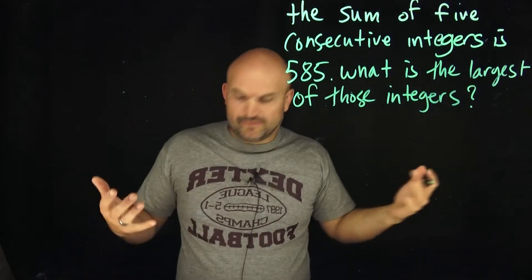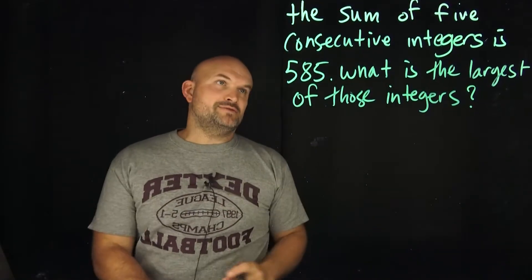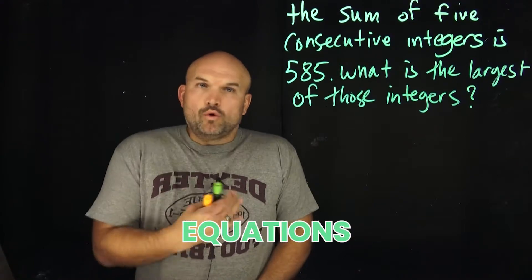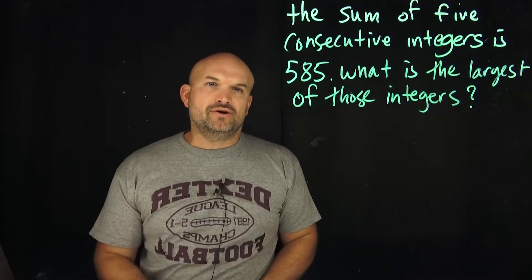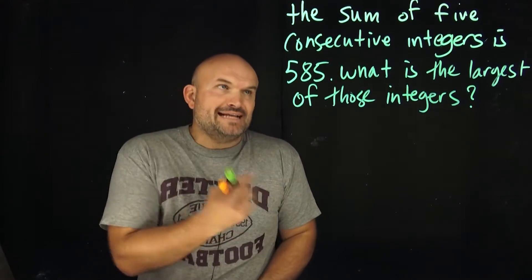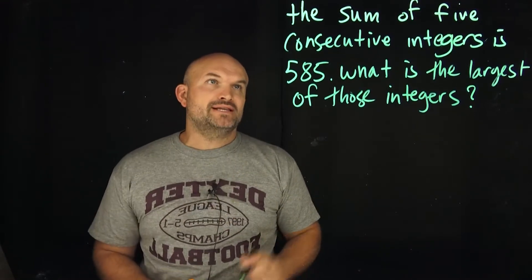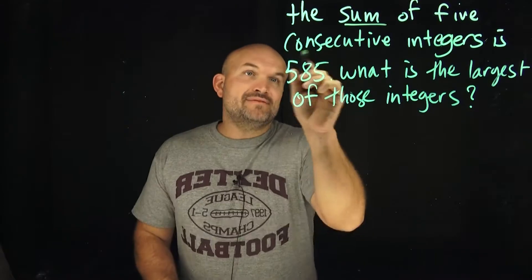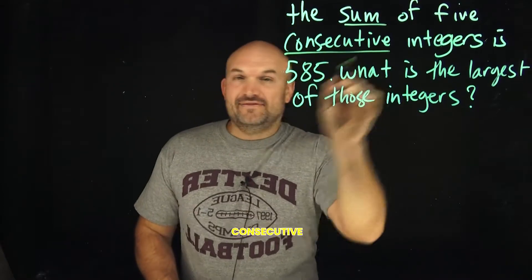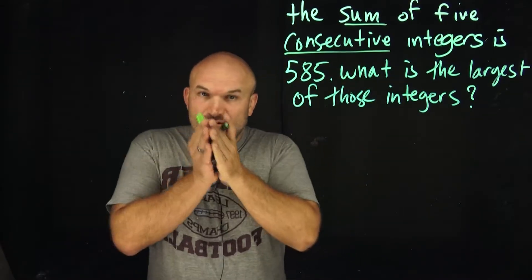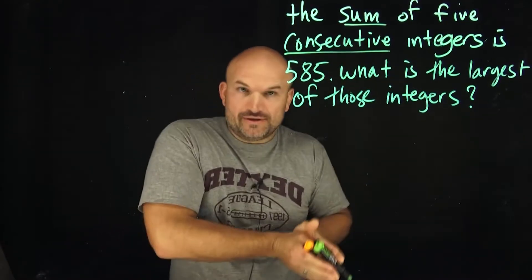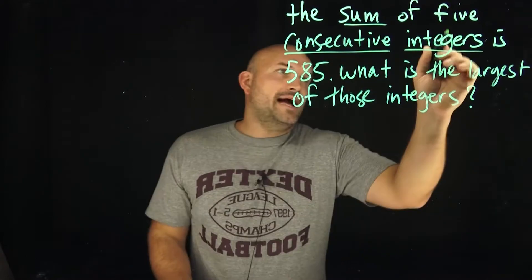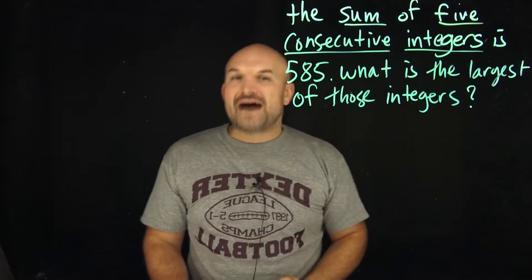On a problem like this, we've got to read through it. What we need to be able to do is identify what equations we can create from a word problem like this. We have the sum, so I know I'm going to be adding. We have consecutive, which means things are going to be right next to each other. And we're dealing with integers, and we're going to have five of them.